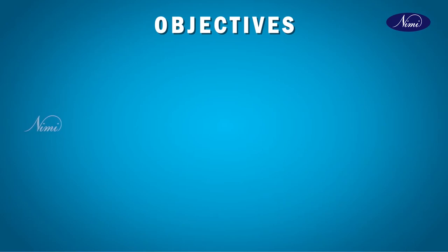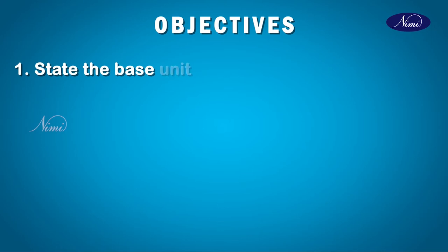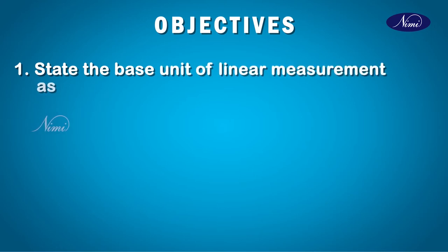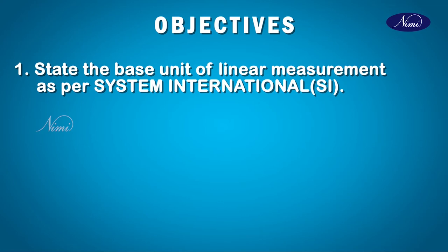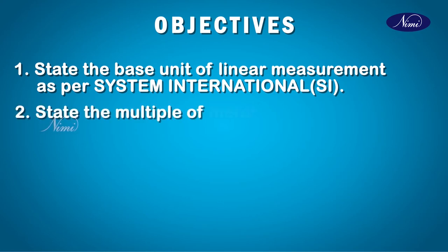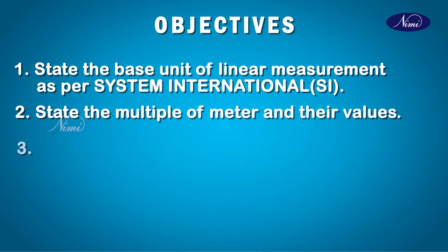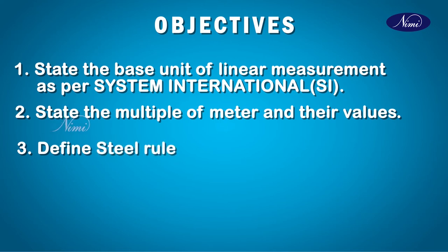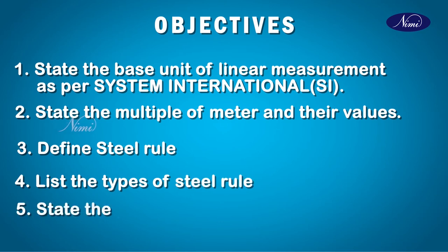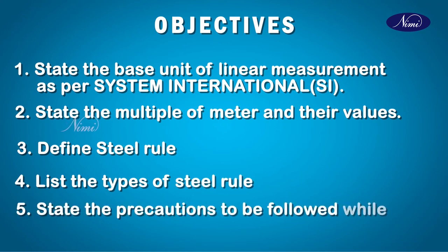Let us see the objectives. Number one: state the base unit of linear measurements as per System International. Number two: state the multiples of meter and their values. Number three: define steel rule and their uses. Number four: types of steel rule. Number five: state the precautions to be observed while using steel rule.